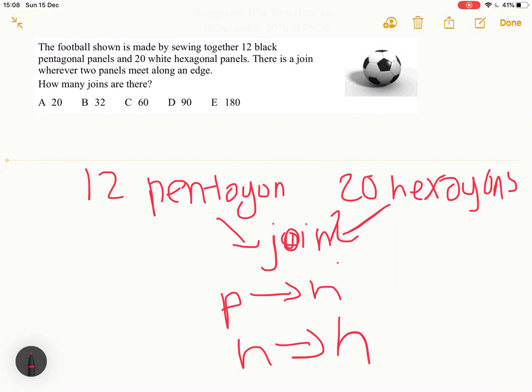So we know that the pentagon never touches any other pentagon, so we can figure out how many joins there are between the pentagon and the hexagon by just doing 12 times the five sides of the pentagon.